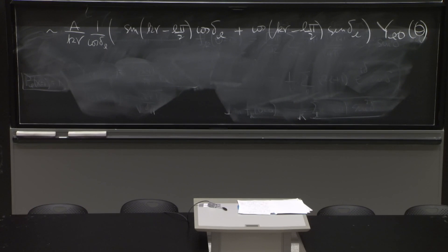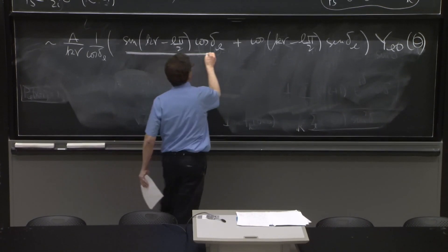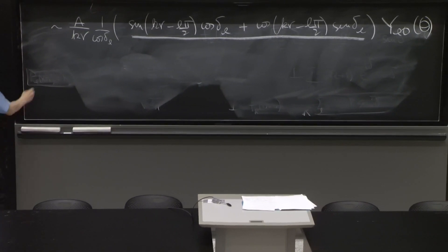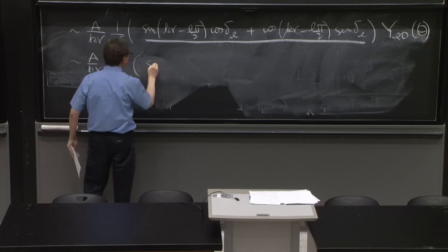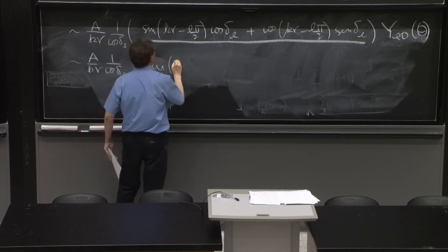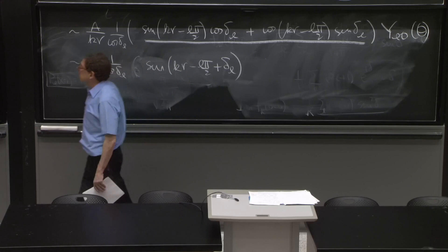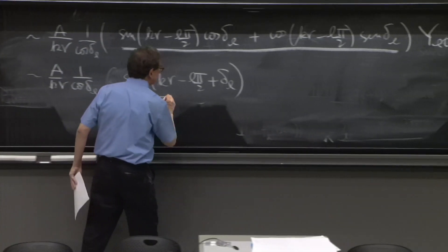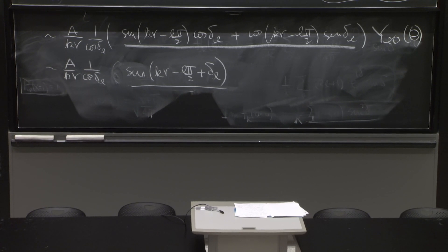So that ratio, tangent, I put the sine over cosine and I have it here. But this, by your favorite trigonometric identity, is equal to A over kr 1 over cosine delta L sine of kr minus L pi over 2 plus delta L. So if this is the phase shift, the solution looks like this far away. A sine of kr minus L pi over 2 plus a delta L. That's one way of identifying the phase shift.